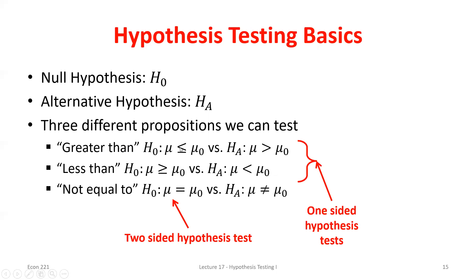We include that equality in the null. It doesn't really matter whether we put the equality in the null or alternative, but it can only be in one of them. If I say greater than or equal to in the null, the alternative is just less than. If I include the equality in both, they're no longer complements because one value could be in both the null and alternative.